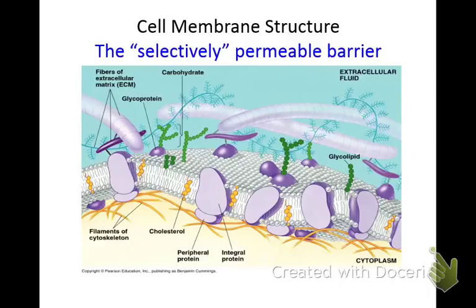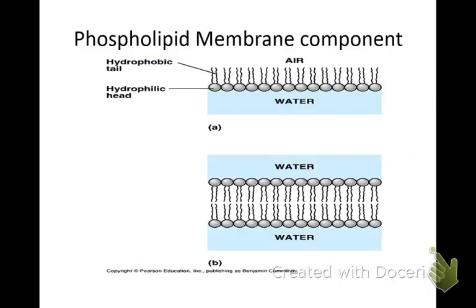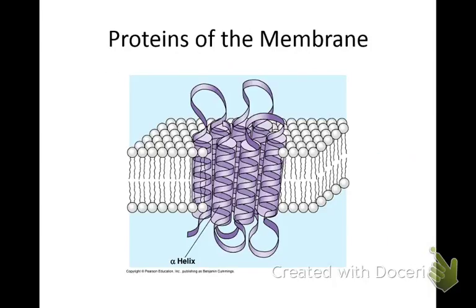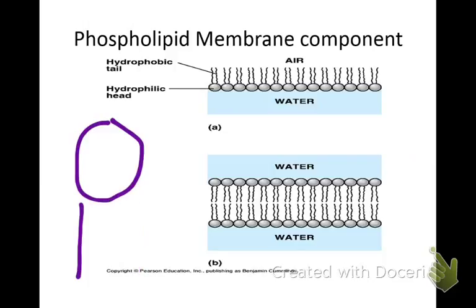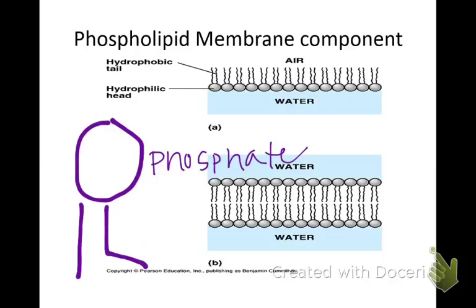The first thing we're going to look at is a phospholipid. I actually want you to draw it on your paper like this. It's got a little funny-looking leg. The top part is a phosphate — that's where it gets the name. Phosphates are negatively charged, like the element phosphorus from the periodic table. And the legs of this phospholipid are the lipids. That's how it gets the name: phospholipid.